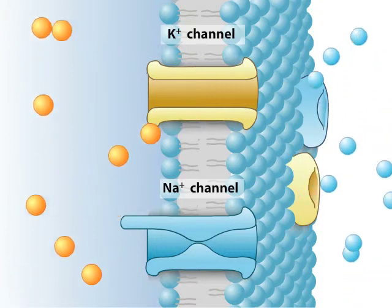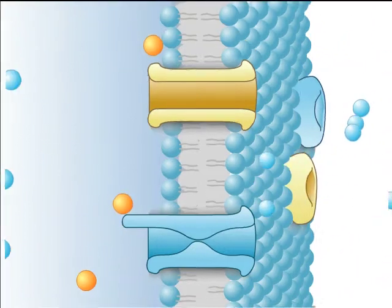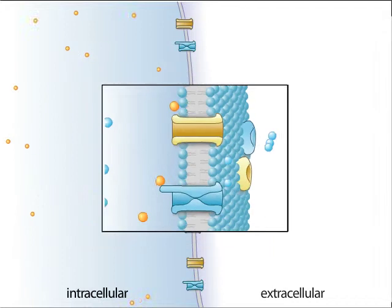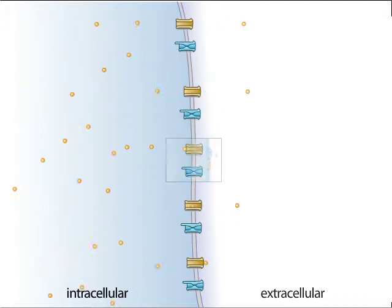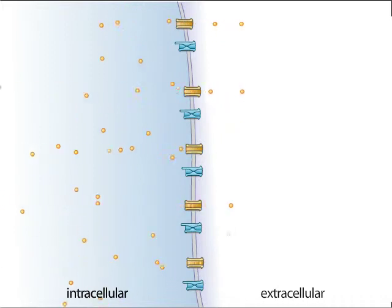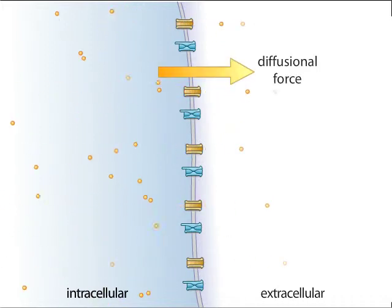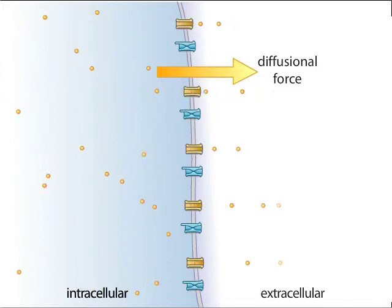In a typical neuron, the internal concentration of potassium is higher than the external concentration. Two opposing forces influence the movement of potassium ions. First, a diffusion force drives potassium ions down their concentration gradient towards the exterior of the cell.